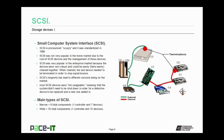SCSI's longevity has led to different versions being on the market at the same time. Many SCSI devices were hot-swappable, meaning the system didn't need to be shut down in order for a defective device to be replaced or for a new device to be added into the chain. There are two main iterations of SCSI: NarrowSCSI, where eight total components could be chained together — one controller and seven devices — and WideSCSI, where 16 total components could be chained together — one controller and 15 devices.